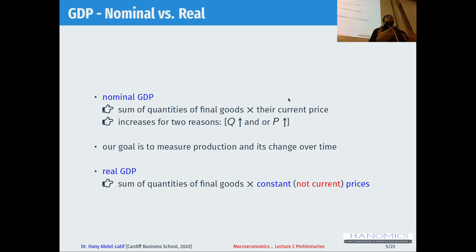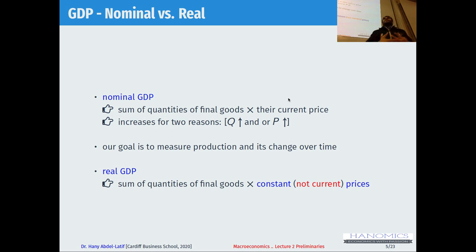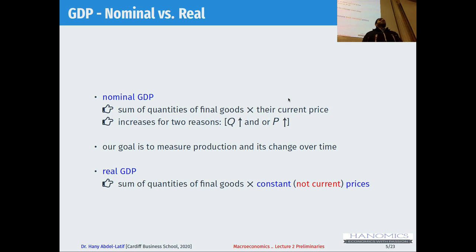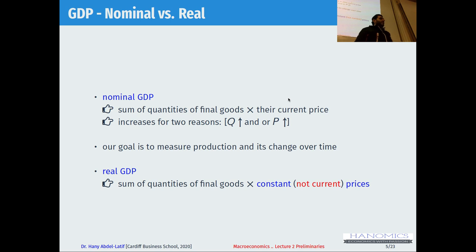What we care about is the change in output — we want to see how much quantities have changed. That takes us to the real GDP. The real GDP: you do the same thing, you have the quantities, but you multiply by constant prices — you don't change the price. For example, if you want to use the prices from 2010, I use the quantities from 2019 times the prices in 2010, or the quantities in 2020 times the prices in 2010. Fixing the prices gives me the real GDP.